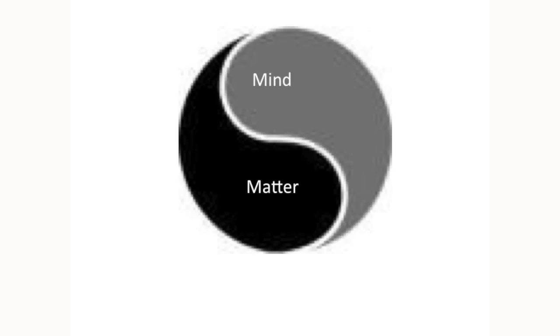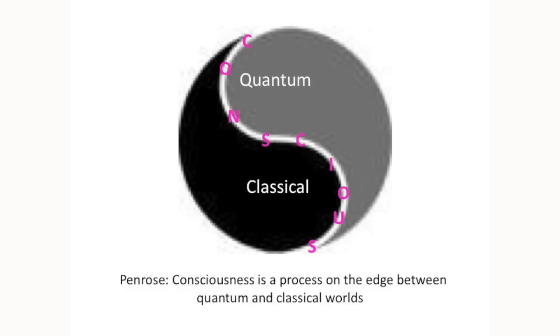Now, some people have observed that the quantum classical divide is the same as consciousness. Mind matter, with mind being very quantum-like and matter material or classical. Quantum being spirit-like, classical being material. And Penrose suggested that, essentially, consciousness is on the boundary. It's a process on the edge between quantum and classical worlds. And spiritual traditions like Kabbalah claim that consciousness dances on the edge between two worlds. It could be between the quantum and classical worlds.